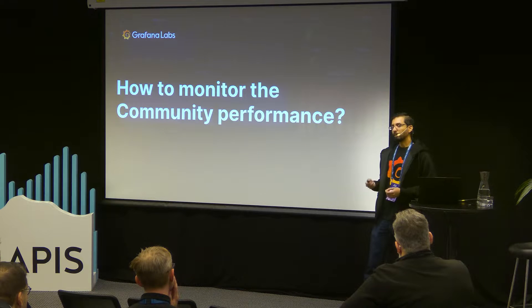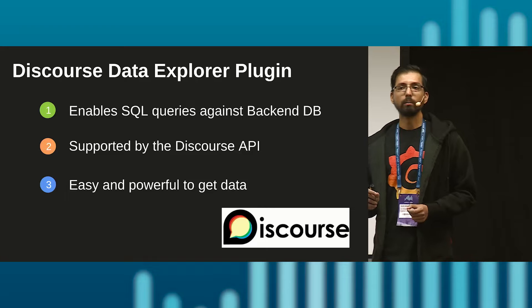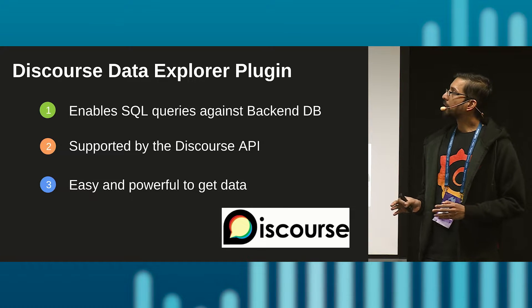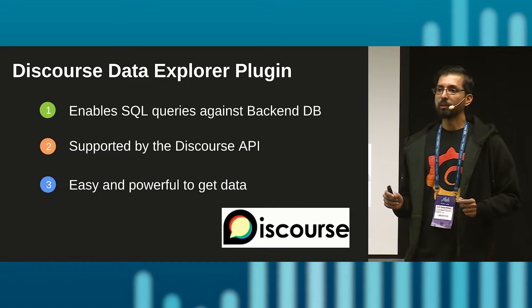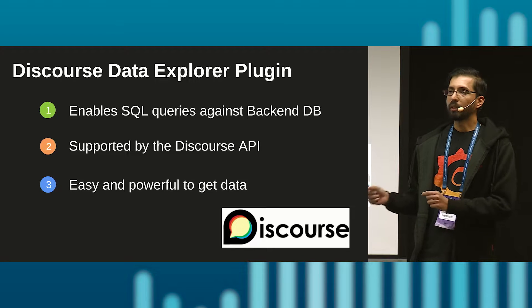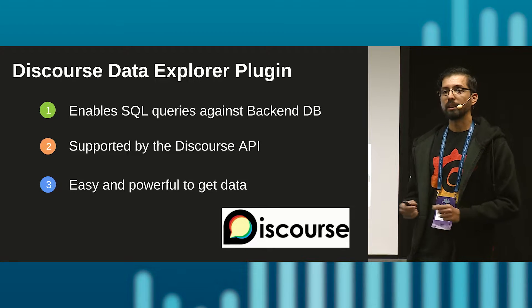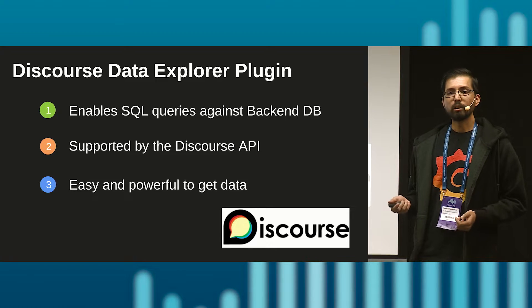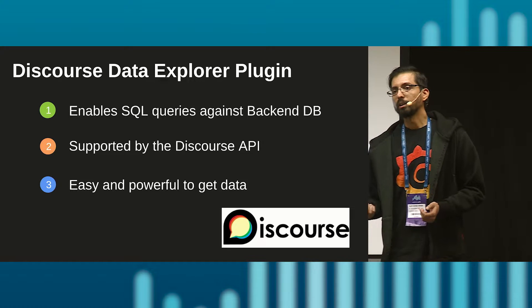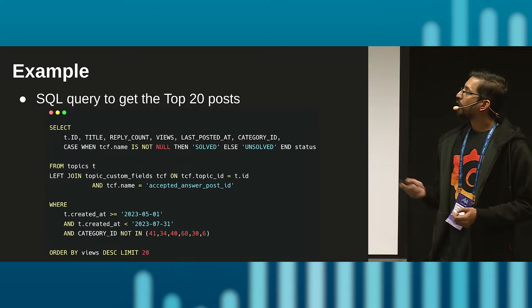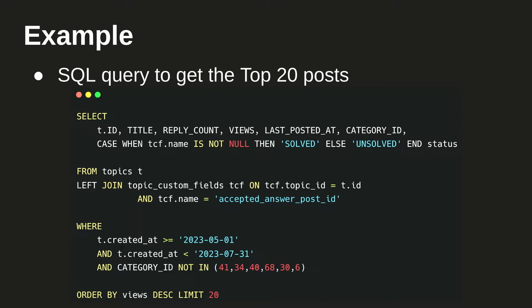To measure community performance, we need to track it. Luckily, Discourse provides a small plugin called the Data Explorer plugin. It allows you to create SQL-style queries — you write a SQL query, send it to Discourse, and get results back. It is also supported by API, making it really easy but also very powerful. Here is my SQL query, using standard SQL to get the top 20 posts in the last quarter — typical SELECT, FROM, WHERE clauses with some filters.